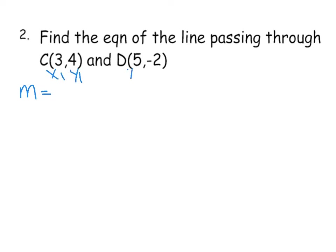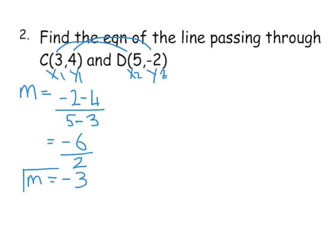So same again. We're going to do our gradient. x1, y1 and x2, y2. And as you get better, you don't necessarily need to always do this. Gradient formula is your y's on the top. So it's -2 take away 4. On the bottom, it's 5 take away 3. And that will give us -6 over 2. Oh, it's similar to the previous example. 6 divided by 2 is 3, but there is a negative there. So m equals negative 3. So that's what we're going to be using in our equation.